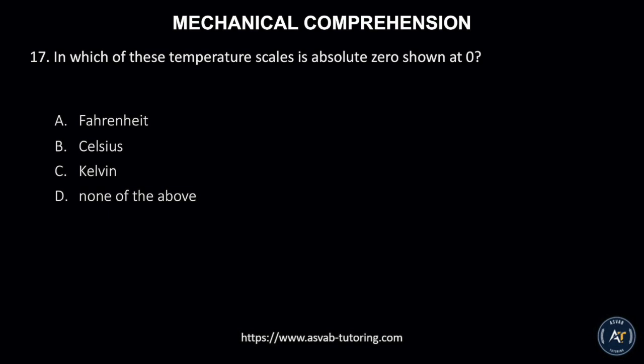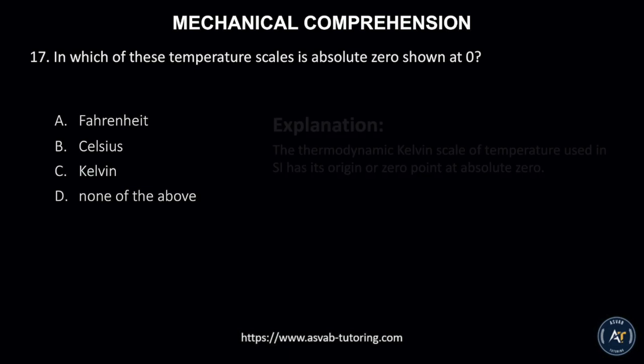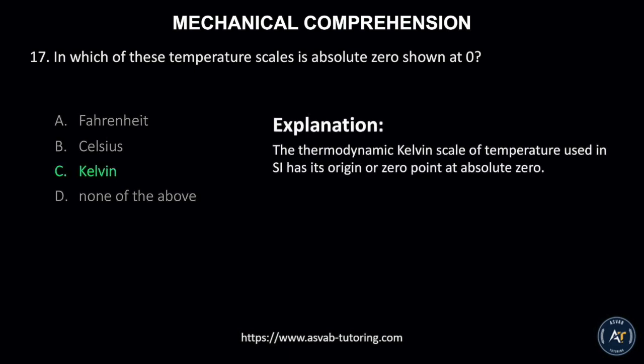Number 17. In which of these temperature scales is absolute zero shown at 0? A. Fahrenheit, B. Celsius, C. Kelvin, or D. None of the above? The correct answer is C. Kelvin. The thermodynamic Kelvin scale of temperature used in SI has its origin, or zero point, at absolute zero.